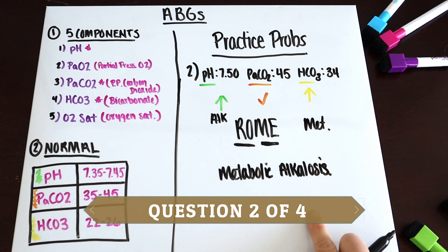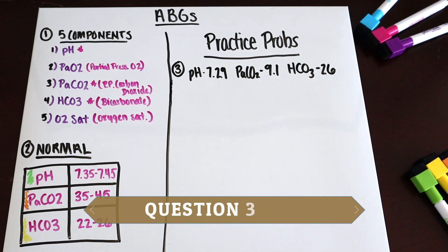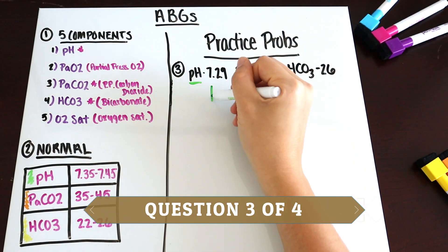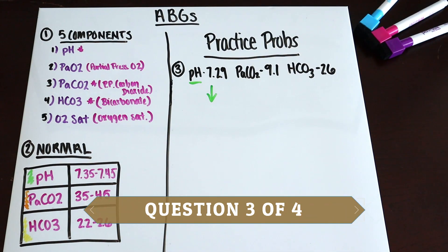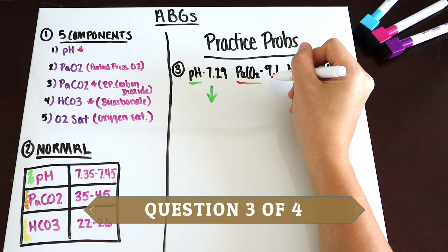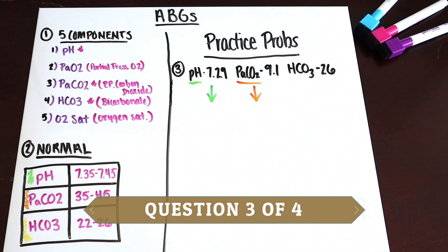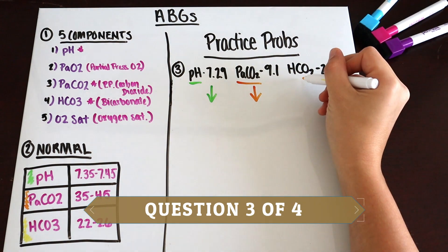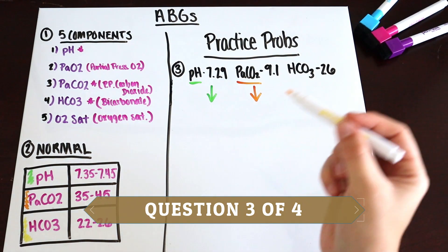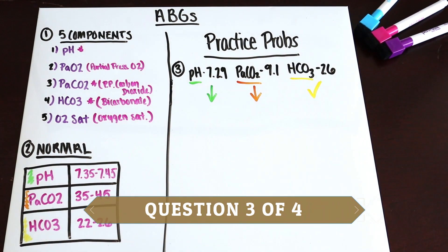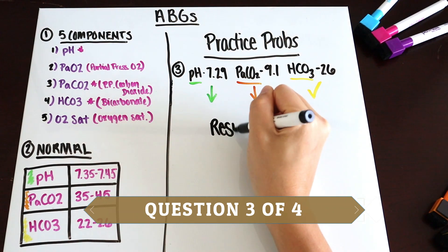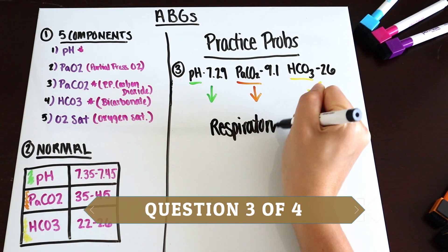For question three, our pH is clearly low — less than 7.35 — so arrow down. Our PaCO2 is 9.1, which is also clearly low — under 35 — so arrow down. Our HCO3 is 26, right on the normal range of 22 to 26 — check mark. We are acidotic and it's in our respiratory system. Remembering ROME, respiratory is opposite, so this would be respiratory acidosis.